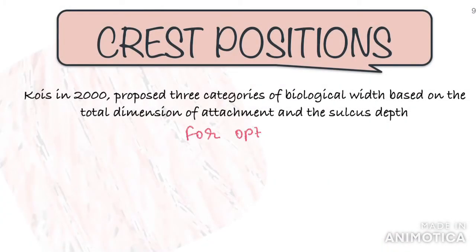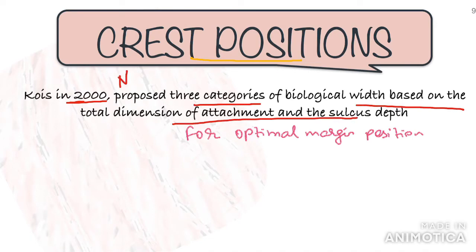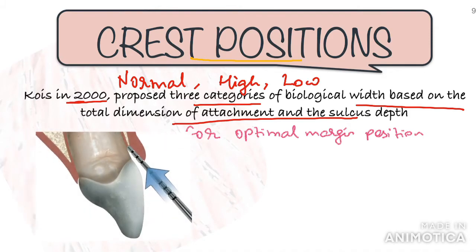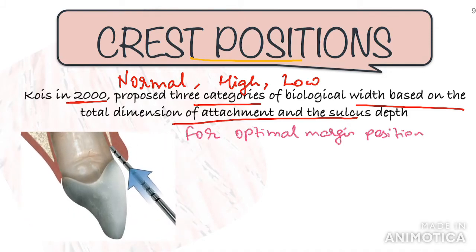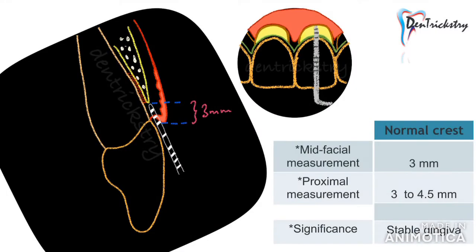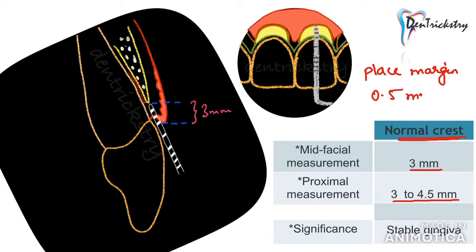Based on the bone sounding measurements of the sulcus and biologic width, you can categorize patients into three groups: normal crest, high crest, and low crest. This crest category allows us to determine the optimal position of margin placement especially in the anterior teeth, and is applicable only to subgingival margins. Measurements are taken from the mid-facial and interproximal regions from the gingival crest to the alveolar bone. In the normal crest, the mid-facial measurement is 3 millimeters and the proximal measurement is 3 to 4 millimeters. In this case the margin should be placed no closer than 2.5 millimeters from the alveolar bone, and a crown margin placed 0.5 millimeter subgingivally tends to be well tolerated.